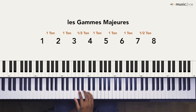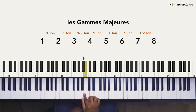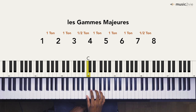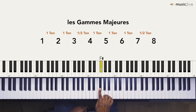On évolue avec la gamme majeure de Sol : premier degré Sol, deuxième degré La, troisième degré Si, quatrième degré Do, cinquième degré Ré, sixième degré Mi, septième degré Fa dièse. On revient sur l'octave avec le Sol.